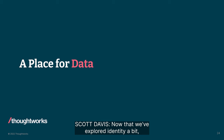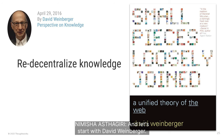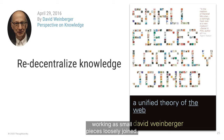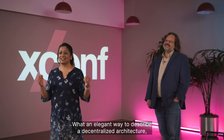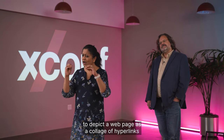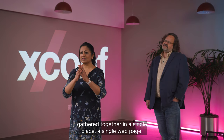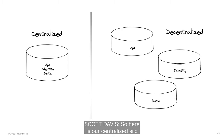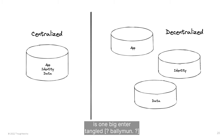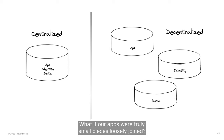Now that we've explored identity, let's dig into the data story behind Solid and Pods. In the early days of the web, David Weinberger described the web working as 'small pieces loosely joined' — an elegant way to describe a decentralized architecture, depicting a web page as a collage of hyperlinks and decentralized knowledge from across the web, gathered together in a single place. Here is our centralized silo with identity, data, and application logic as one big intertangled ball of mud. What if we decentralize this model by pulling the individual pieces apart — what if our apps were truly small pieces loosely joined?